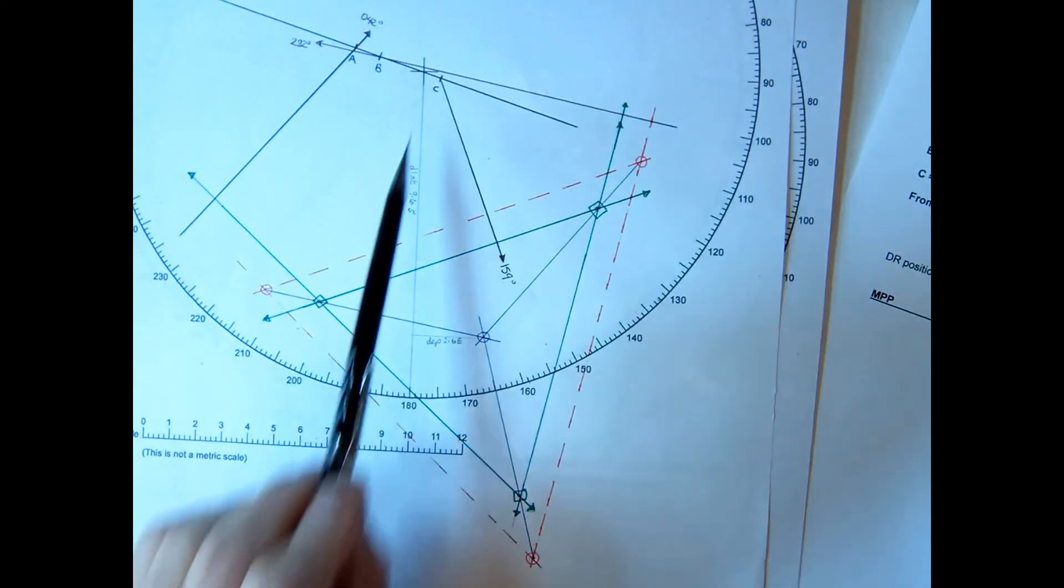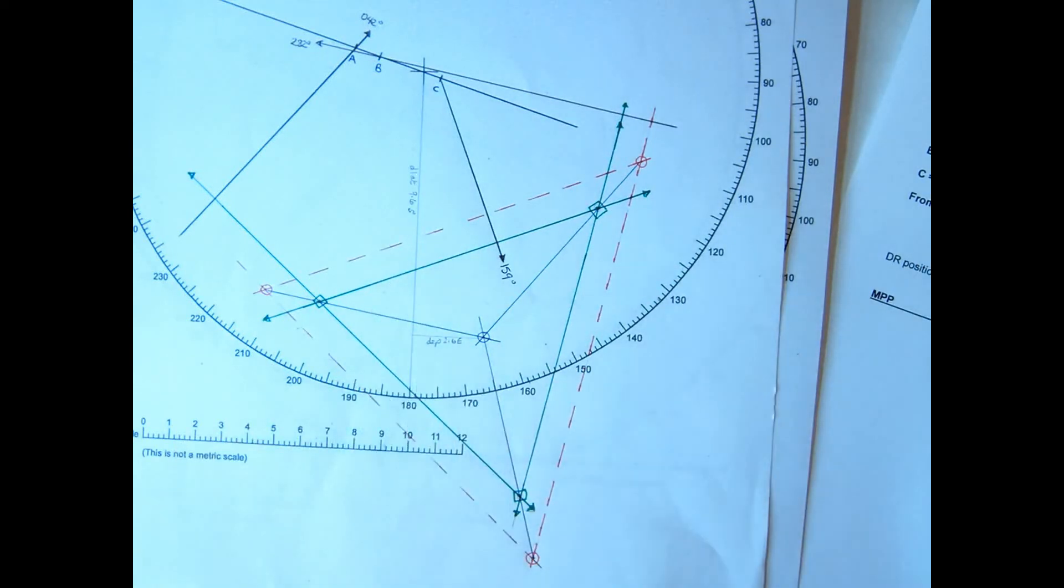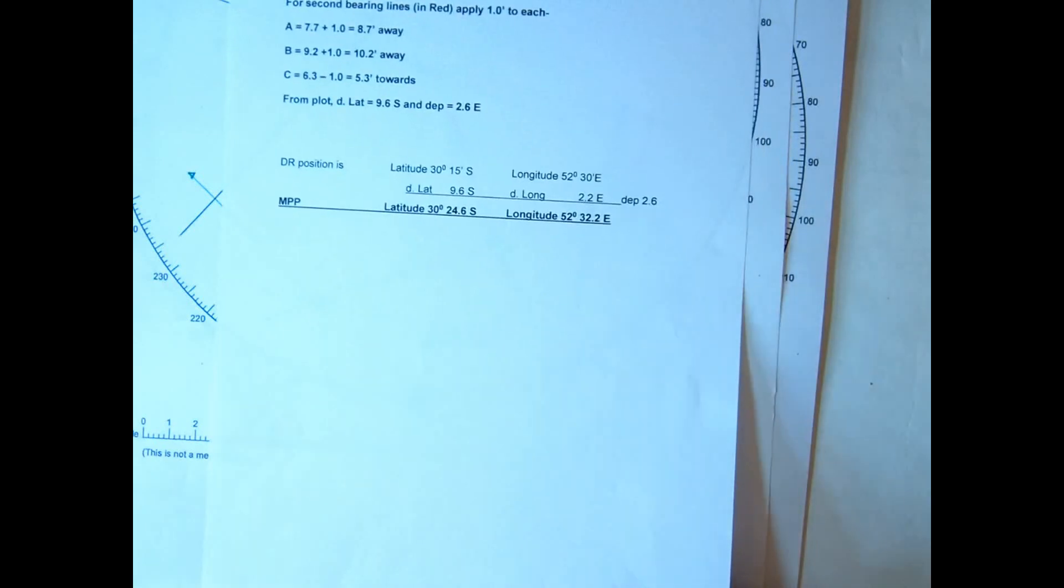So from that we can measure our DLAT and we can measure our departure. So that's the plot where we have a cocked hat and we are actually inside the cocked hat. And that's the values that I plotted. And that's the position that I estimate our MPP will be for this particular plot.